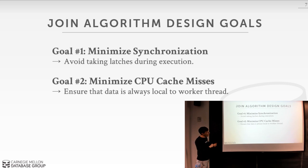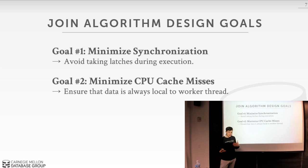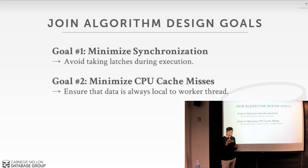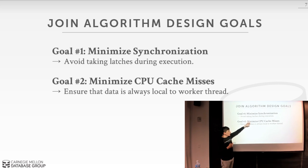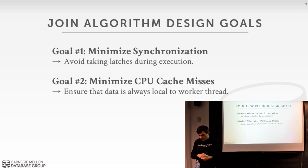The second goal is to minimize CPU cache misses. This is different from the NUMA locality we talked about last class — now we want to make sure that whenever a thread tries to read something from memory, that data is in our CPU caches. You can extend this further to NUMA local memory, but even more important is maximizing cache affinity and cache reuse.